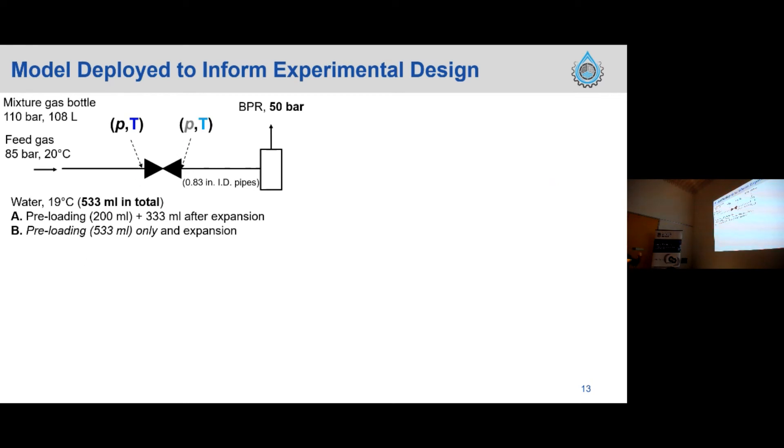Here's one example of the water injection scenario. There are two scenarios, and the total injection amount was exactly the same. The first one is pre-loading of 200 ml of water at the upstream section, and then open the JT valve. Then I continued the water injection, 333 ml more. But the other case is pre-loading exactly the same amount, open the JT valve, and there was no further water injection.